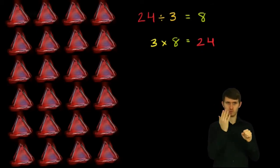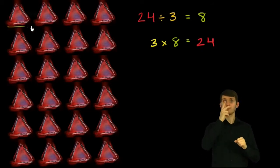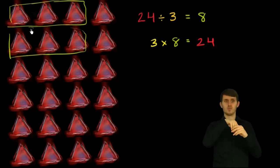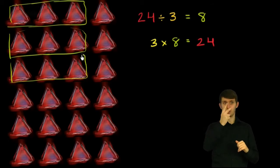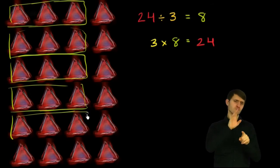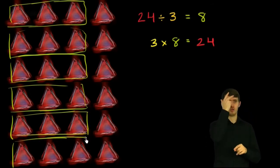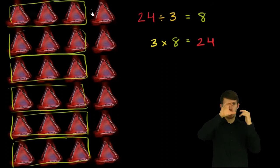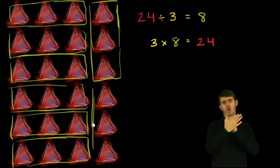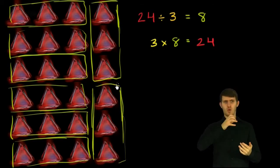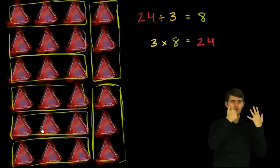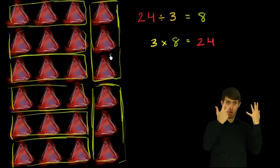So if we divide 24 into groups of 3, then for example this is a group of 3, that is a group of 3, this is a group of 3, that's a group of 3, that is another group of 3, this is another group of 3, and that's another group of 3. So how many groups of 3 did we get? We have 1, 2, 3, 4, 5, 6, 7, 8 groups of 3.